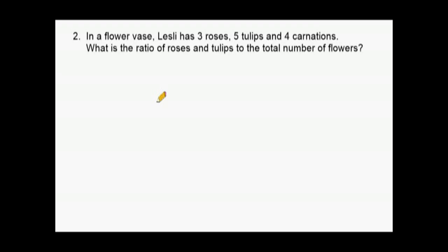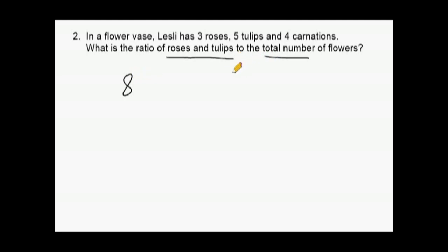Number two reads that in a flower vase, Leslie has three roses, five tulips, and four carnations. What is the ratio of roses and tulips to the total number of flowers? The first thing we have to do is add the number of roses to tulips — three roses and five tulips for a total of eight — and we compare that to the total number of flowers.